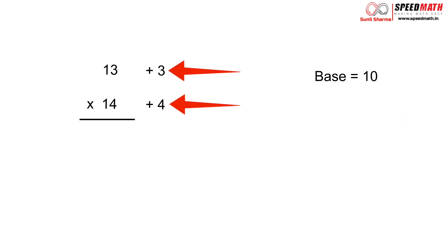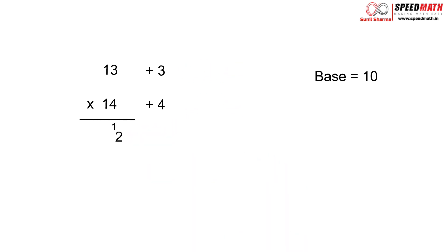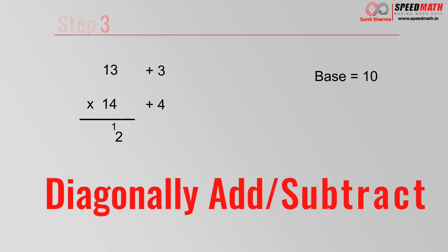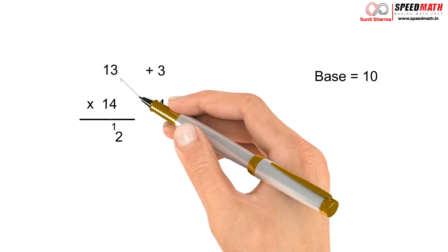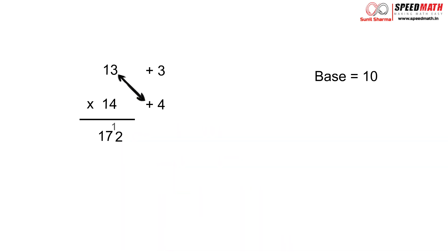So 3 × 4 is 12, which is double digit — we write the units place 2 as it is and carry forward 1. Step 3: diagonally we are going to add or subtract depending upon the sign. Here the sign is plus, so diagonally add 13 and 4, giving 17. Adding the carry forward 1, we get 18. So 13 × 14 = 182.